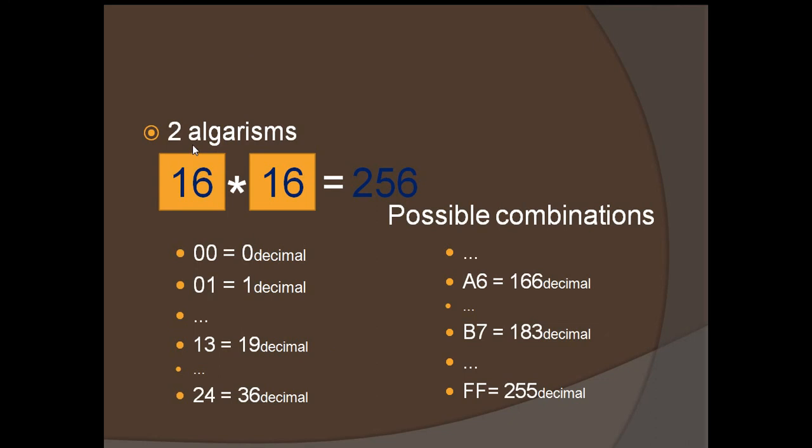If you have two digits, you have 256 possible combinations. For example, 00 is 0, 01 is 1, 13 is actually 19 in decimal, and so forth until FF, which is 255 in decimal.